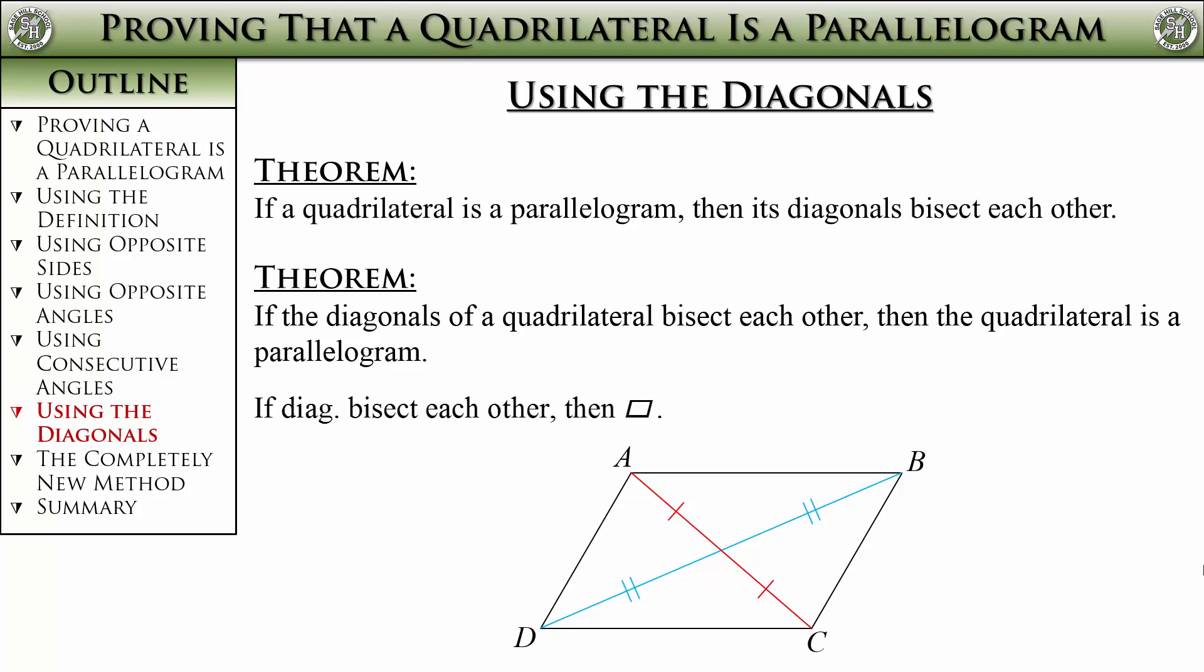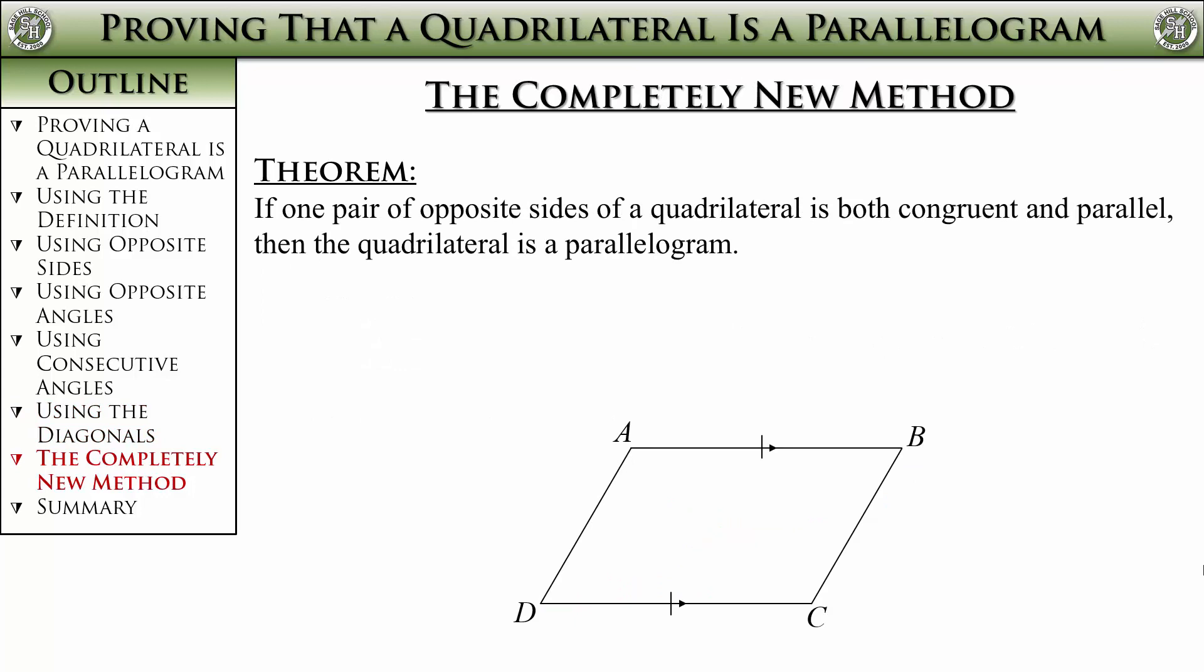And we have already covered five of the six methods. Now on to the new method. It says that if one pair of opposite sides of a quadrilateral is both congruent and parallel, then the quadrilateral is a parallelogram. It is shown in the diagram below.